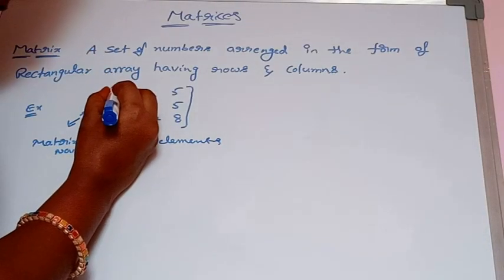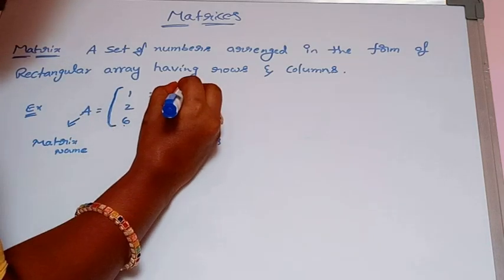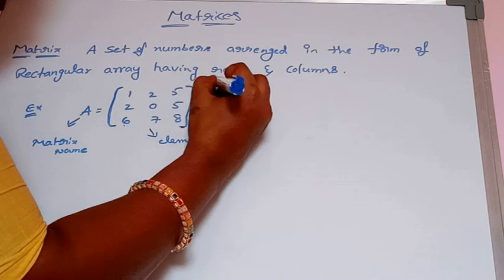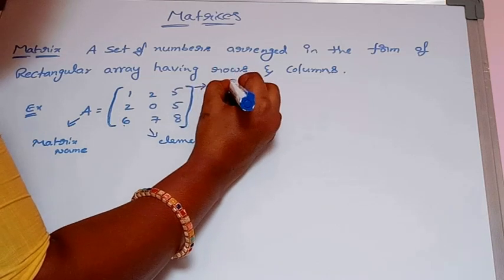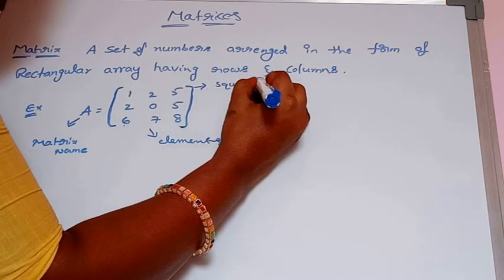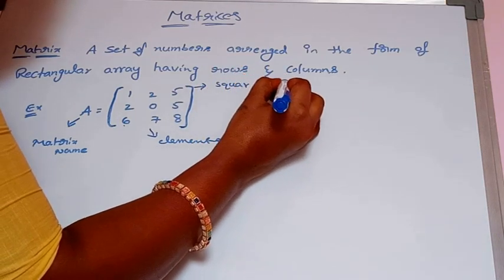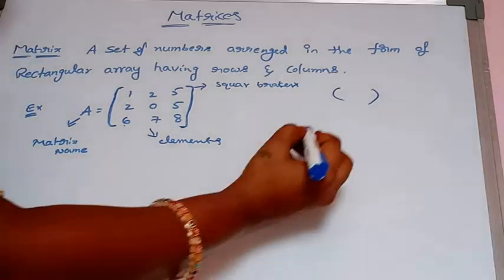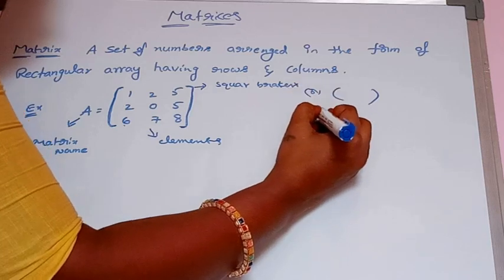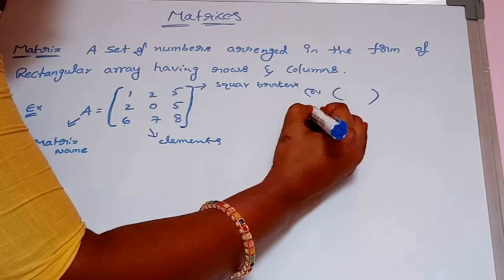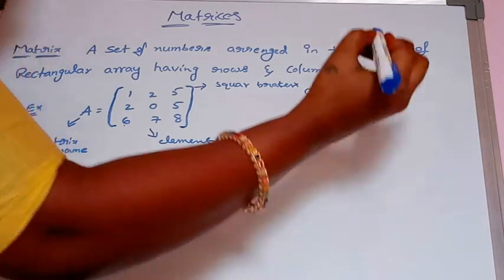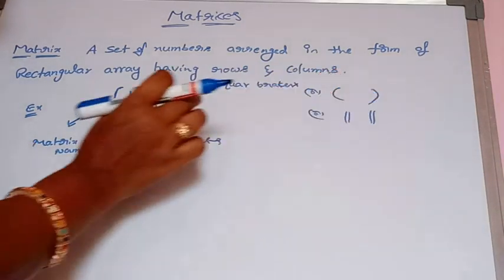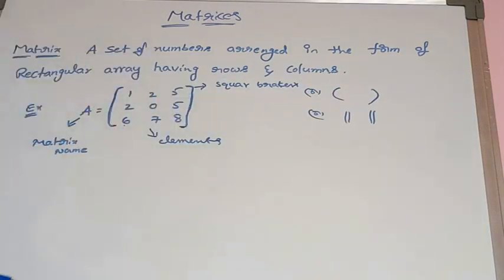Matrices are enclosed using square brackets, parenthesis brackets, or a double bar. These brackets are used to indicate matrix symbols.